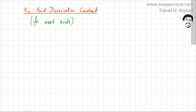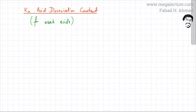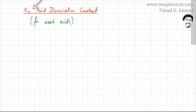In the following lecture, we're going to talk about Ka, which is also known as the acid dissociation constant. This term usually applies for weak acids which are in equilibrium, and Ka is going to be used to denote or describe the strength of these weak acids.